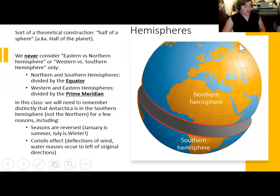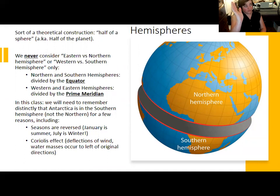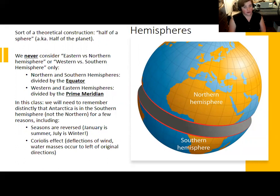Be careful with north/south hemisphere differences: some properties are distinctly different in the southern hemisphere. Most importantly, seasons are reversed. Because of Earth's tilt, sunlight hits the northern hemisphere more directly during part of the year, so it is winter in the southern hemisphere when it is summer here.